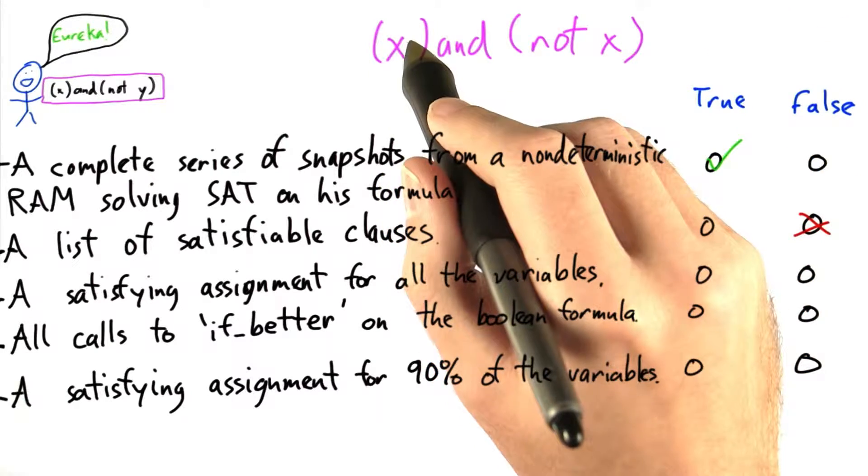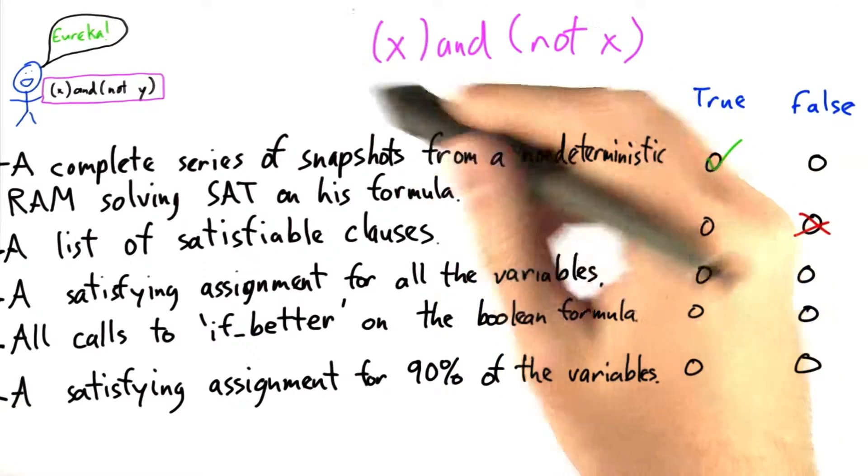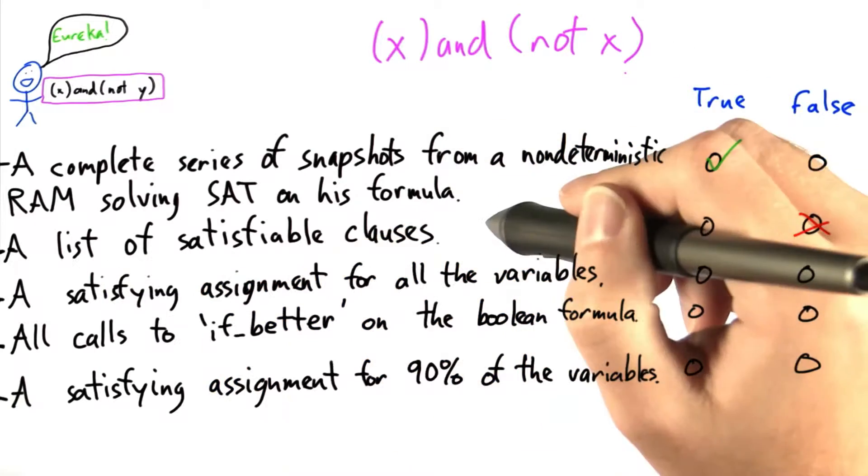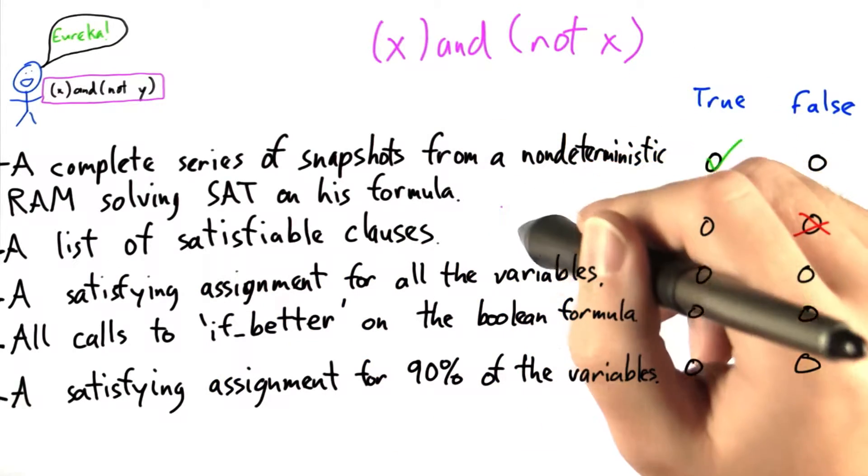Now, clearly x is a satisfiable clause, and so is not x, but the entire Boolean formula is definitely not satisfiable. So a list of satisfiable clauses actually isn't enough for us to believe Bob.